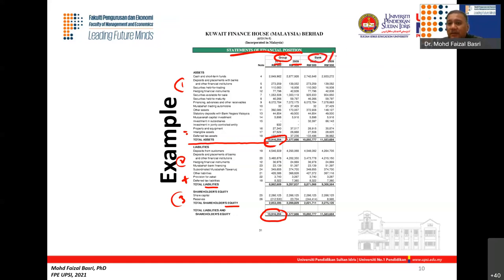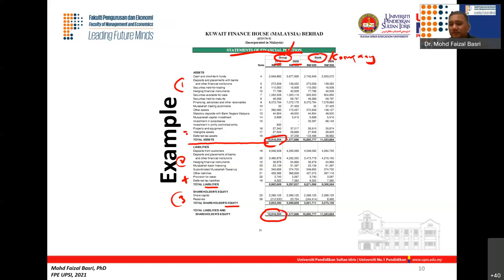In annual reports they will always give you two years of statements — the current year and the previous year. They also present data for both the group and the company. Since most information is recorded at group level, always use the group figures for your analysis to keep it consistent.